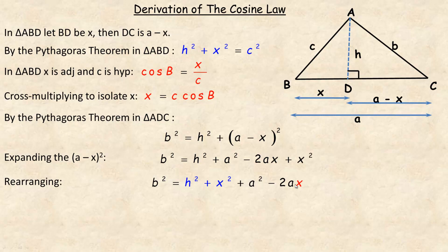And so now we're going to make a substitution. This is why we did these couple of things up here. So H squared plus X squared is equal to C squared. So in place of this, we're going to put a C squared. And this is equal to X. So in place of X, we can put this C cos B.